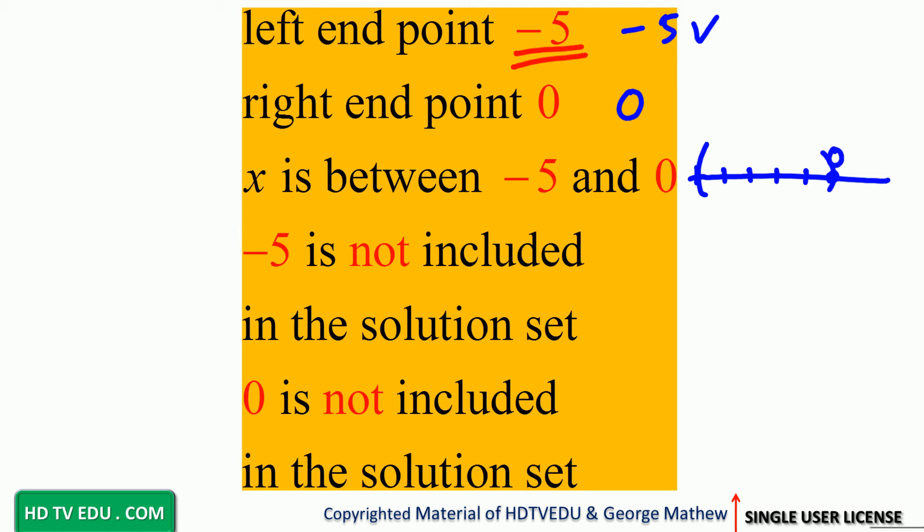So x is between negative 5 and 0. Negative 5 is not included, why? Because we have parenthesis on the left. How about 0? 0 is also not included in the solution set because we have parenthesis at 0. So we have negative 5 less than x less than 0.